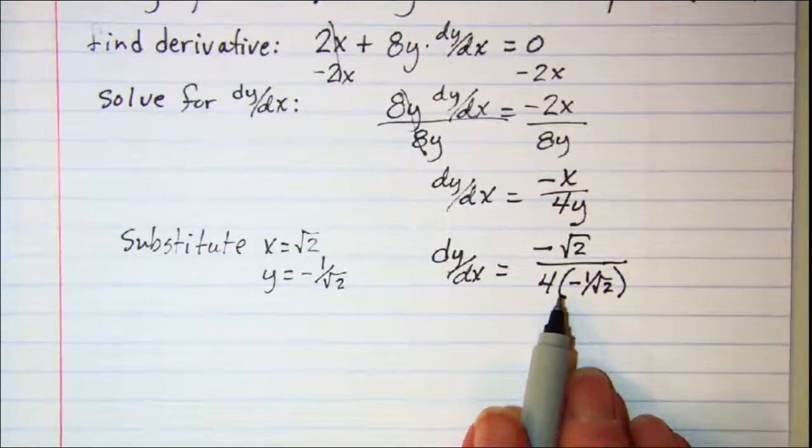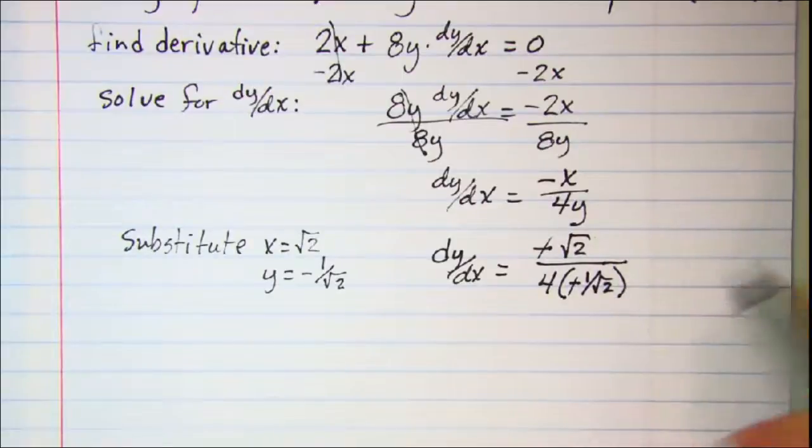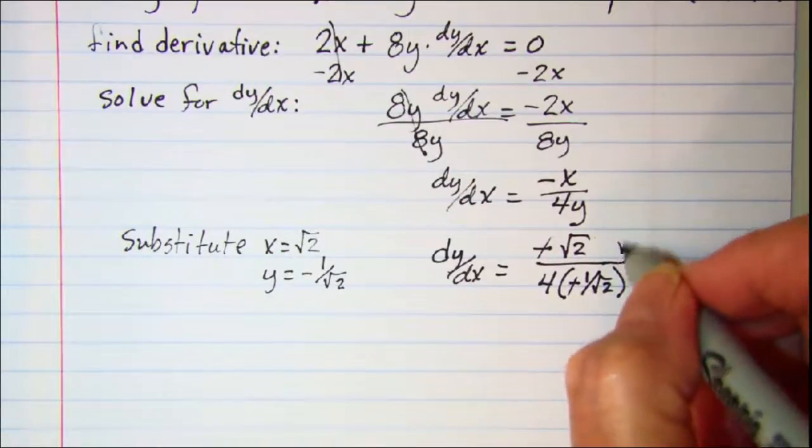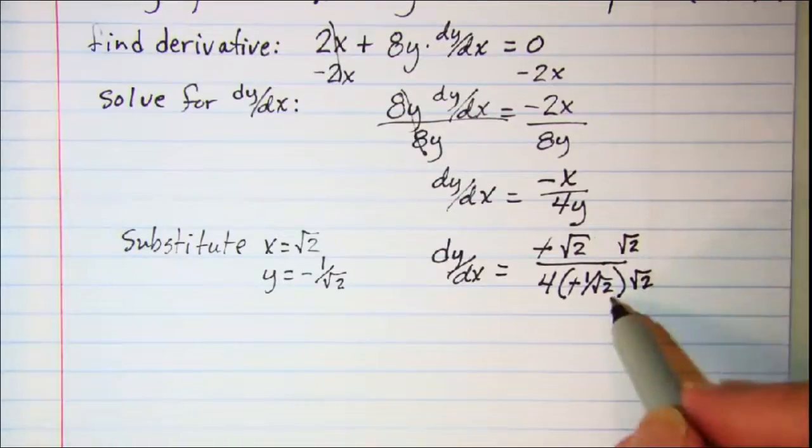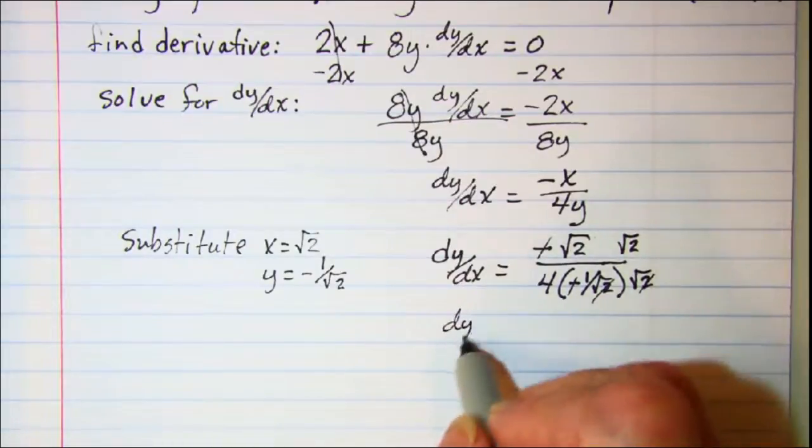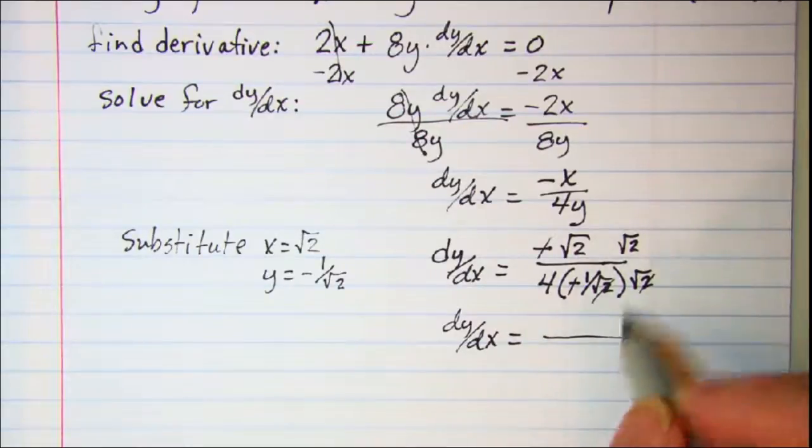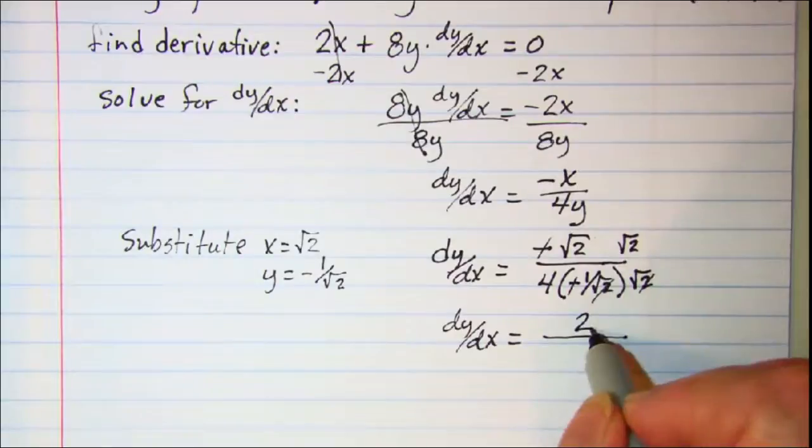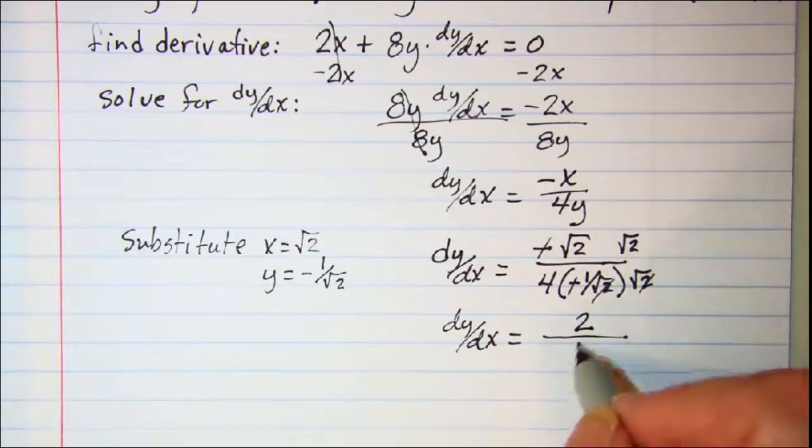And to simplify this we can cancel off our negatives and let's multiply top and bottom by root 2. This root 2 and this one will cancel off and I have dy dx is equal to square root of 2 times square root of 2 is 2 and then 4 times 1 which is 4.